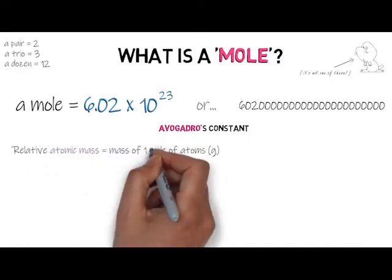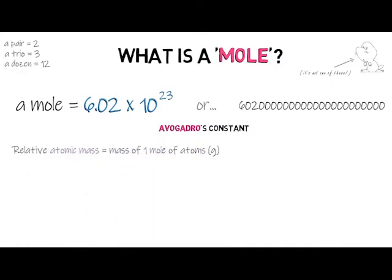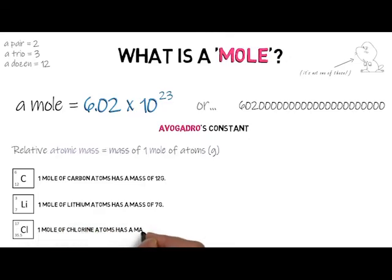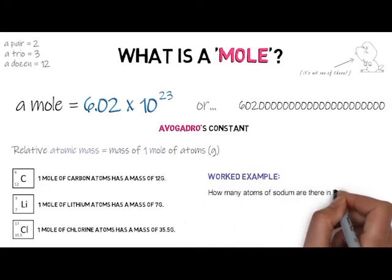If you know the relative atomic mass of an element, that is the mass of one mole of atoms of that element. Carbon has an atomic mass of 12, which means one mole of carbon atoms has a mass of 12 grams. Lithium has a relative atomic mass of 7, so one mole of lithium atoms has a mass of 7 grams. Chlorine is listed as 35.5 on the periodic table, so one mole of chlorine atoms has a mass of 35.5 grams.